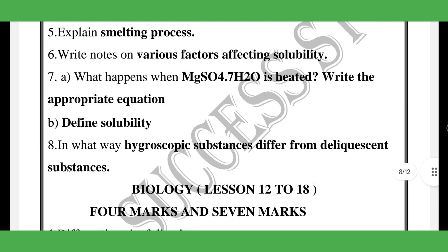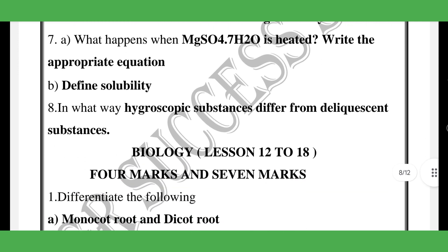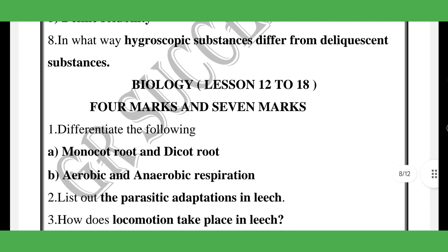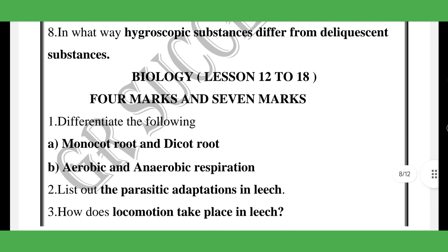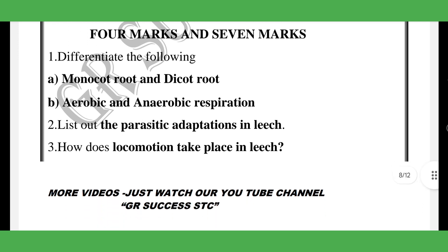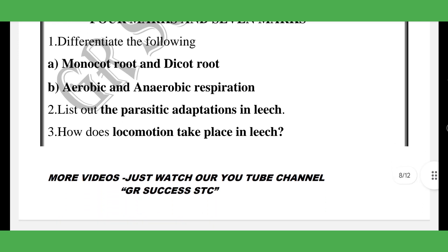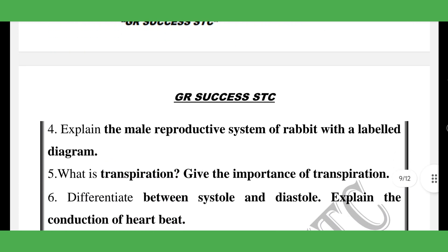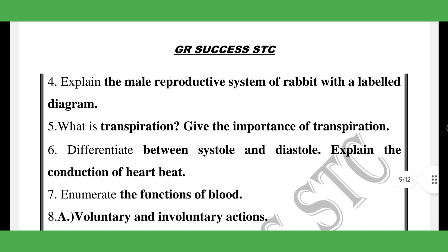These are seven-mark category questions. For biology four-mark and seven-mark: differentiate monocotyledon and dicotyledon, aerobic and anaerobic respiration, parasitic adaptations of leeches, how locomotion takes place in leeches — very important. Male reproductive system of rabbit — seven-mark category. Transpiration is important.